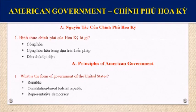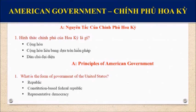American Government A. Principles of American Government. Question 1: What is the form of government of the United States? Republic. Constitution-based federal republic. Representative democracy.